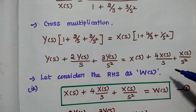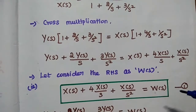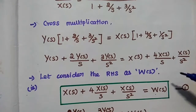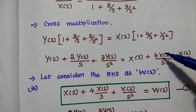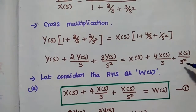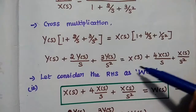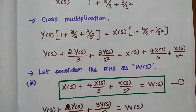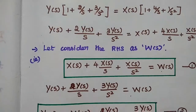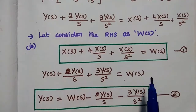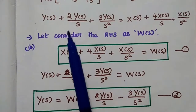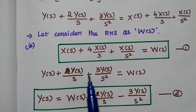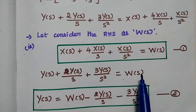After getting this expression, the next step is to consider the input side as W of S. The input side is X of S plus 4X of S by S plus X of S by S squared — we consider this side equal to W of S. After substituting, we get Y of S plus 2Y of S by S plus 3Y of S by S squared is equal to W of S.